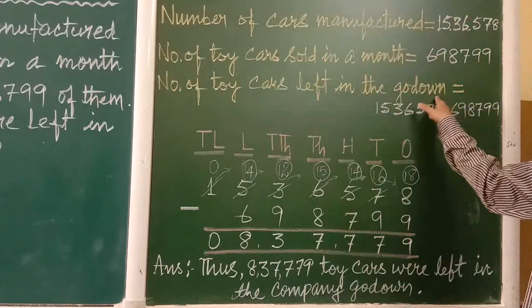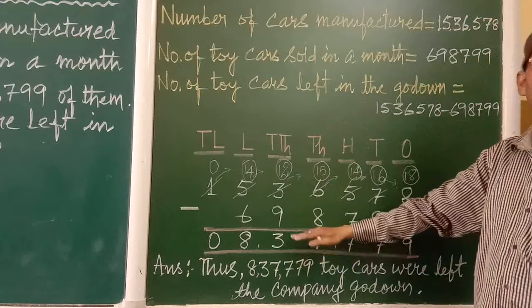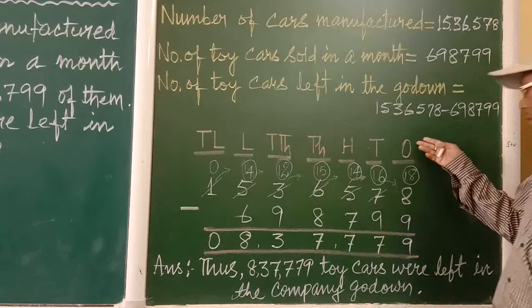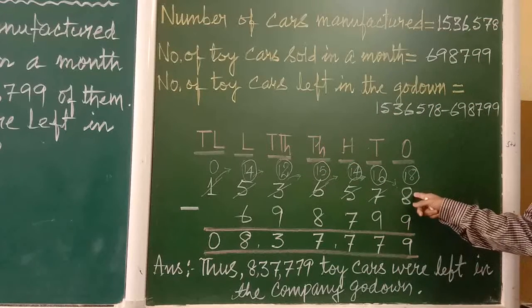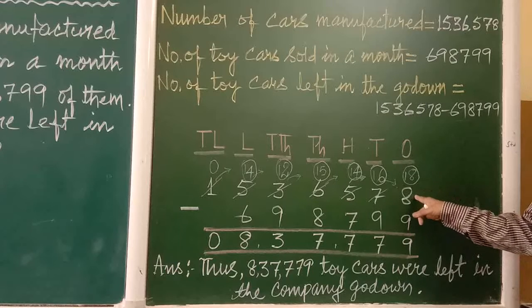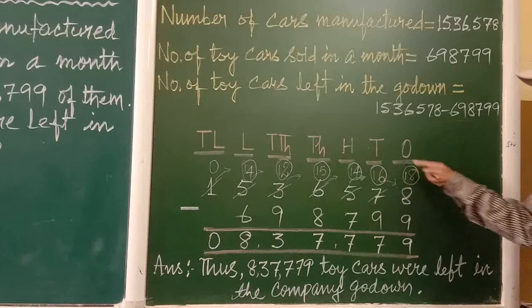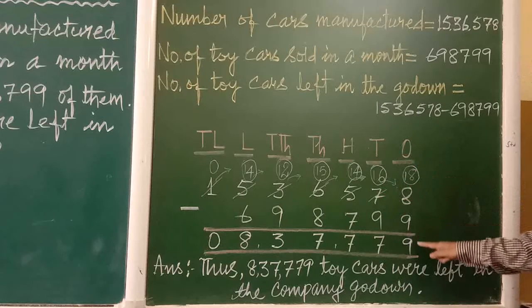You can subtract it here. Since I am not having space here, so I am subtracting here. So now I will show you how to subtract. So here in the ones place, you have to subtract 9 from 8. So it can't win, so we have to borrow one from 7. So this will be 18. 18 minus 9 is 9.